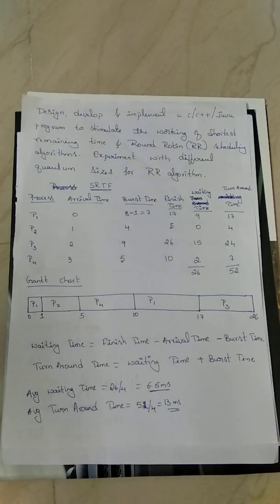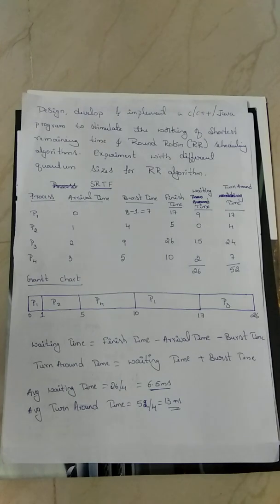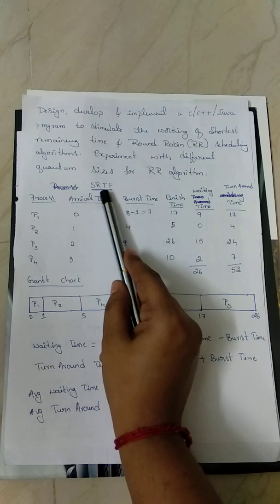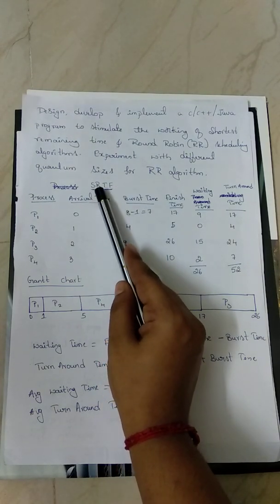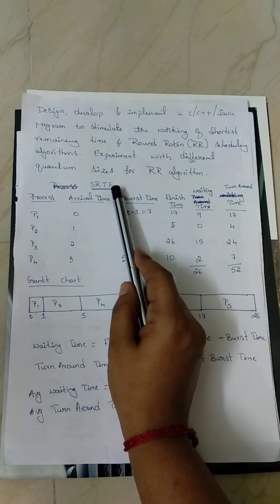Hello everyone. Now we'll discuss design, develop and implement a C, C++, or Java program to simulate the working of Shortest Remaining Time and Round-Robin scheduling algorithms. Experiment with different quantum sizes for the RR algorithm. First we'll see Shortest Remaining Time First, or SRTF. The SRTF scheduling algorithm is nothing but the preemptive Shortest Job First algorithm.